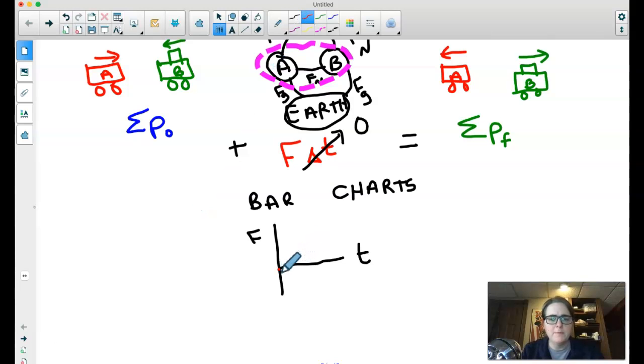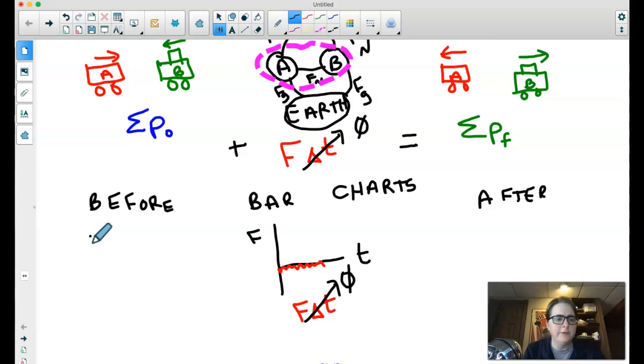In this case, since there's no unbalanced forces, then it would just be a squiggle along that horizontal line, or that horizontal axis. Otherwise, you would take the area of the force time graph. But in this case, since the force is zero, that area is zero. And then just like we did before and after sketches, I would do before and after bar charts. Except instead of drawing a picture of the scenario, I'm going to sketch some bar charts to represent that momentum. And what we typically did is we said the vertical axis represents how much momentum there is. The horizontal axis represents how much mass.